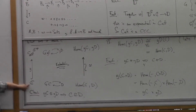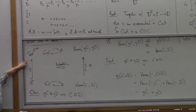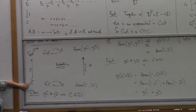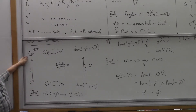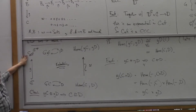Moreover, if this is known to be Cartesian closed, the Yoneda embedding preserves exponentials as well — it preserves all the Cartesian closed structure. So if this is a Cartesian closed category, then this functor preserves all the Cartesian closed structure. I haven't shown you yet that this thing is Cartesian closed — I'll do that next time, along with showing that this preserves it.